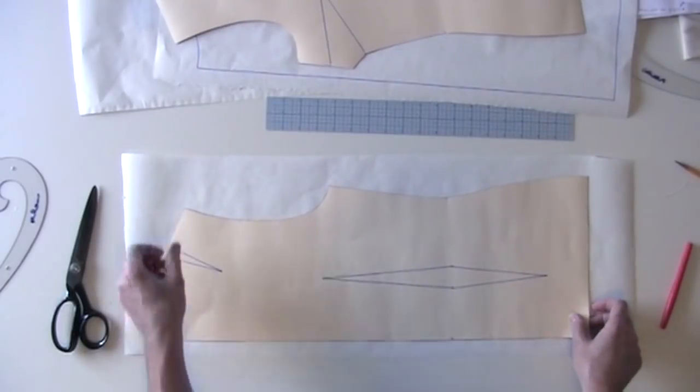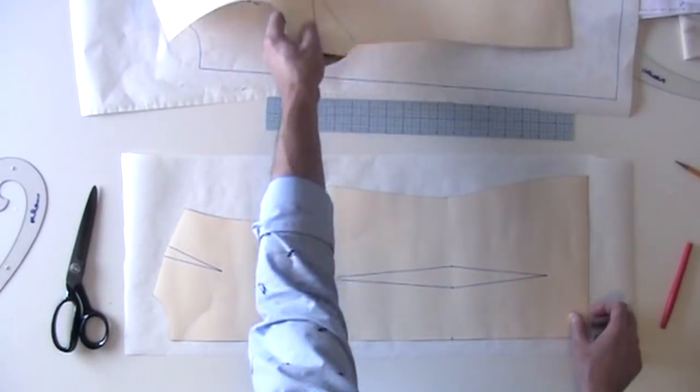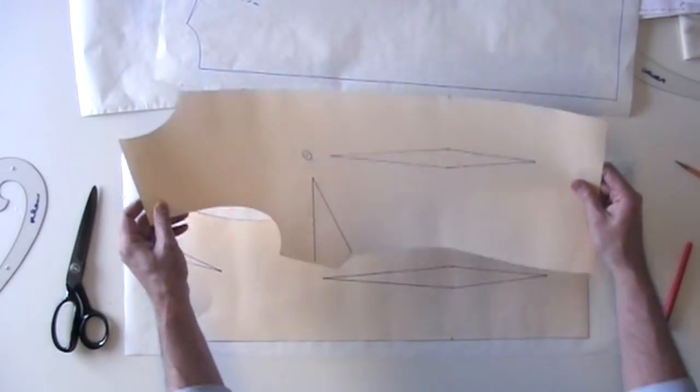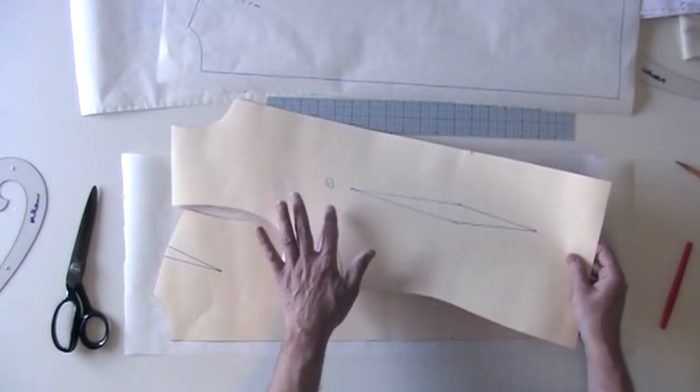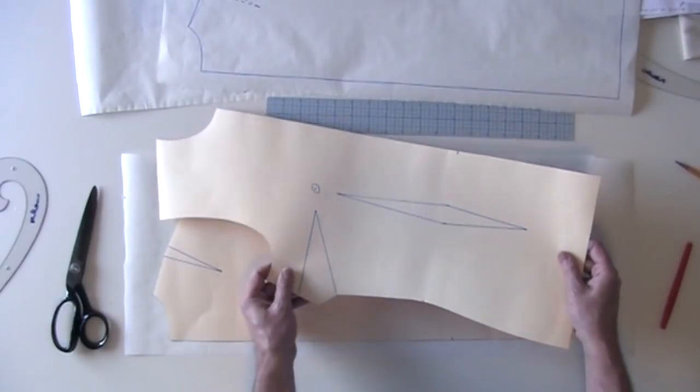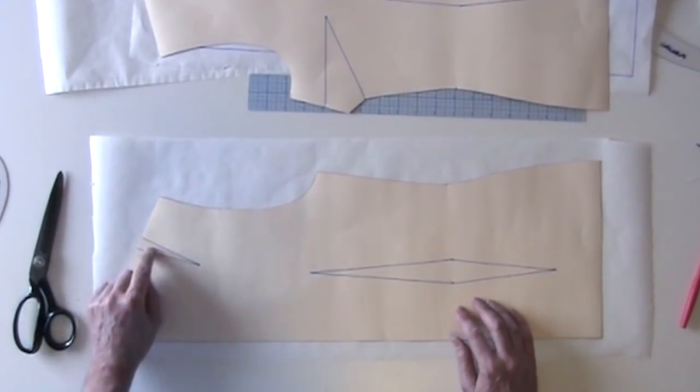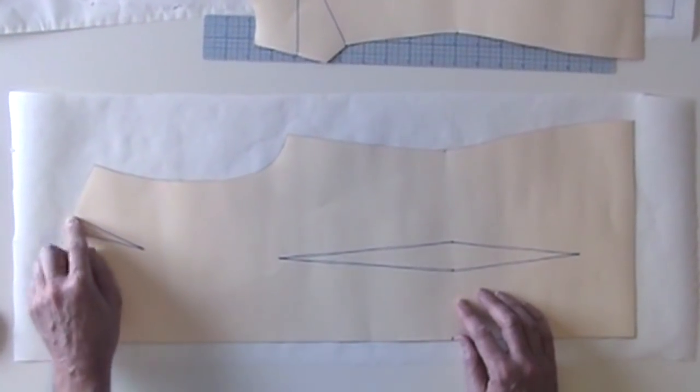I'm going to start with our blouse sloper that we drafted with darts. This one still has the bust dart in the side seam, whereas the back has the shoulder dart now rotated to the shoulder.